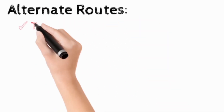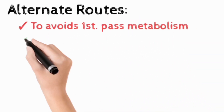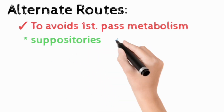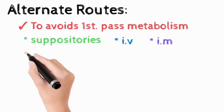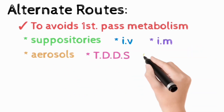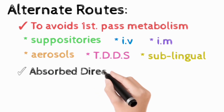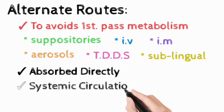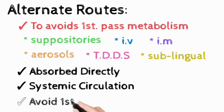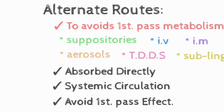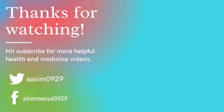Since the first pass effect greatly reduces the bioavailability of the drug, we can choose an alternative route of administration such as sublingual, intravascular, intramuscular, aerosol, or transdermal routes to avoid the first pass effect, because they allow the drug to absorb directly into the systemic circulation, bypassing the first pass effect.